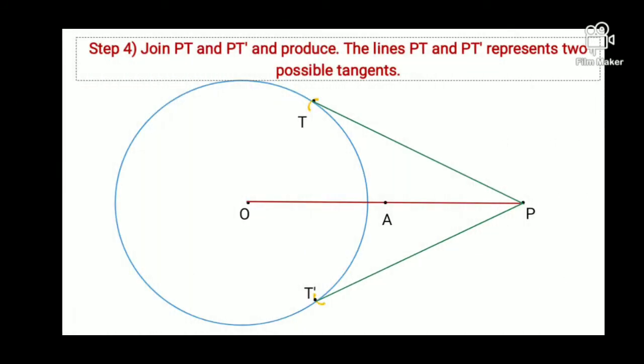Step 4: Join P to T and P to T' and produce. The lines PT and PT' represent the two tangents which are the required tangents.